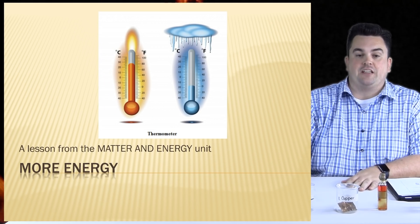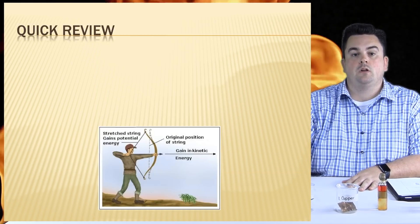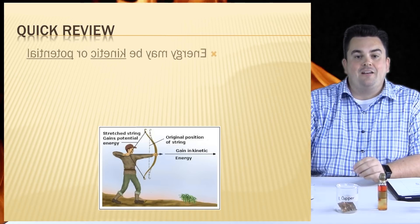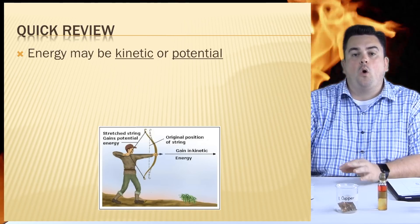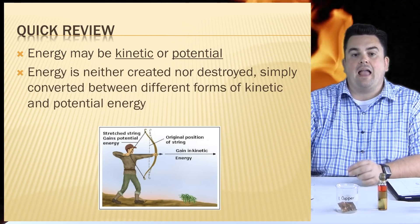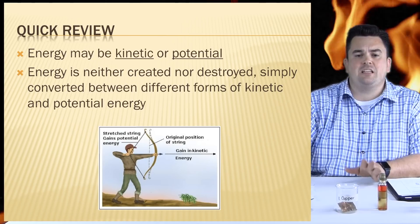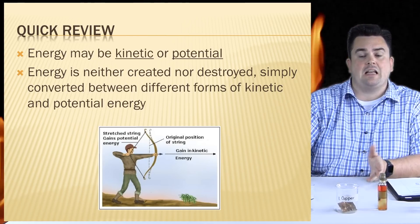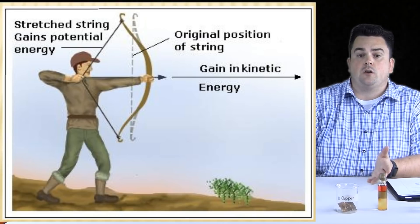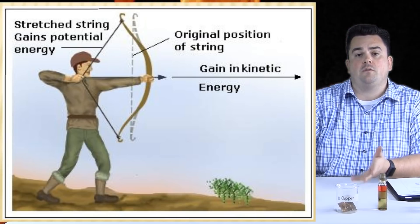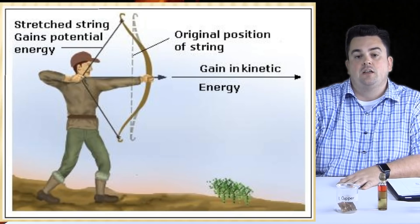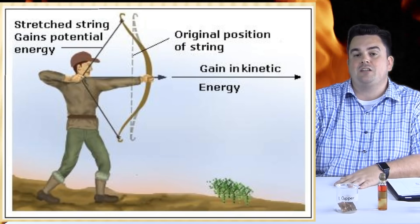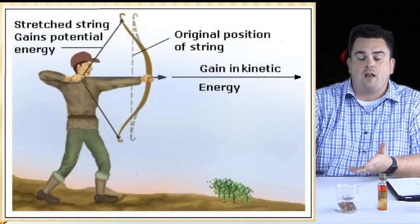What up nerds? So in the last episode, we talked about energy. True story, bro. And now we're going to talk about more energy. So let's get started. More energy, a lesson from the matter and energy unit. Quick review. So energy may be kinetic or potential. Energy is neither created nor destroyed, simply converted between different forms of kinetic and potential energy. So in the picture, we have the archer pulling back the cord of his bow. This represents potential energy. As he releases the arrow, all of that potential energy gets converted into the kinetic energy of the moving arrow.